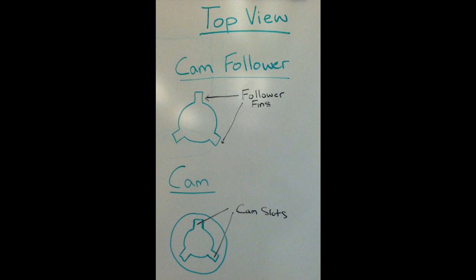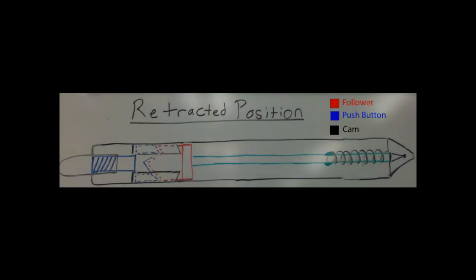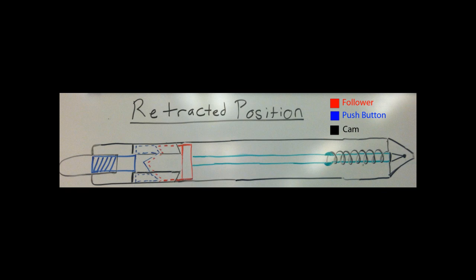The cycle is complete once the follower fins are aligned in the cam slots. The spring returns to its equilibrium position so that the ballpoint retracts into the pen casing.